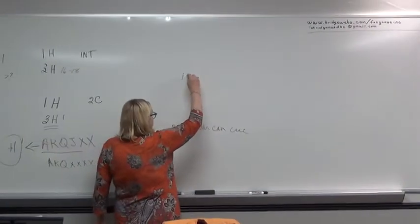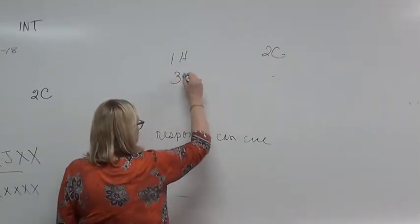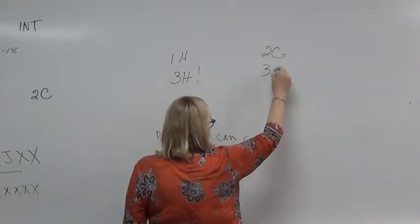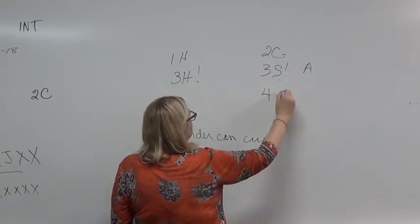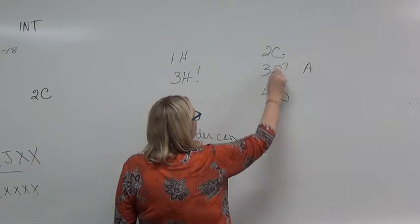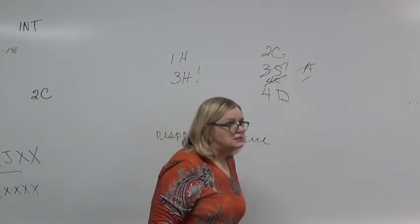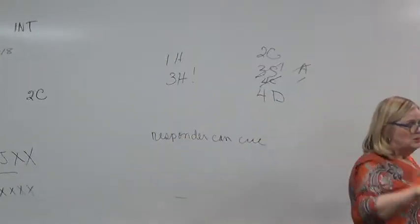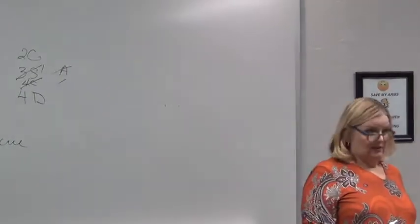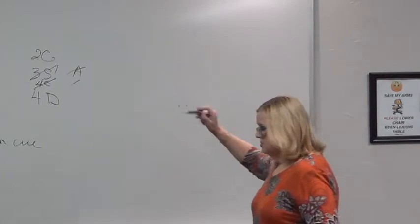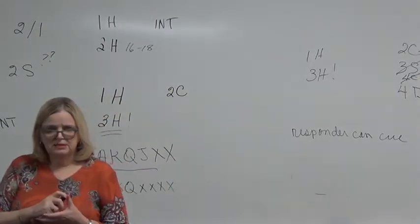I'll bid one heart, two clubs game forcing, three hearts this is the suit. Three spades is a cuebid ace. If they bid four diamonds and they don't bid three spades or four clubs, they don't have those two aces. We bid our controls cheapest possible. So when we skip one, we skip it because we don't have it.